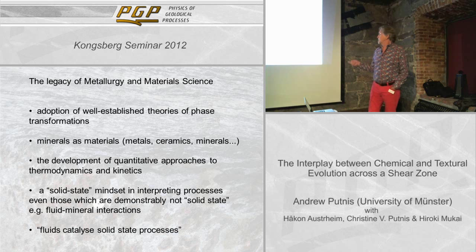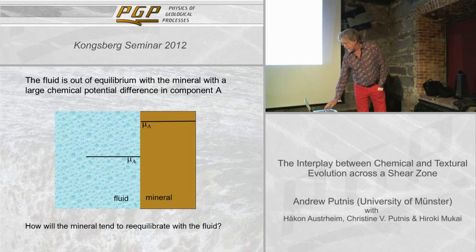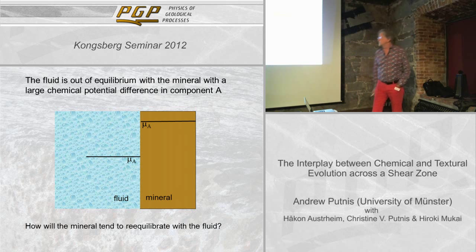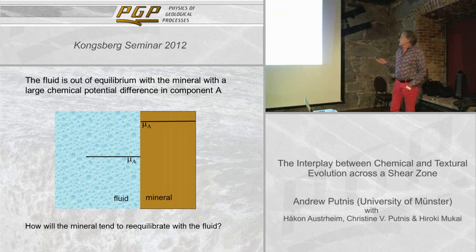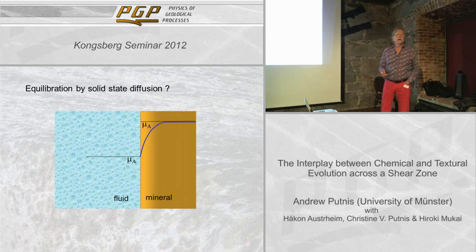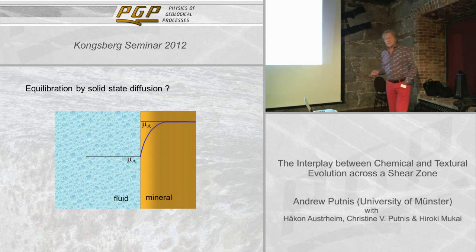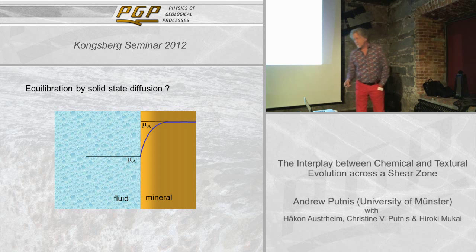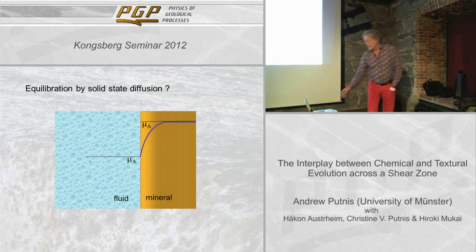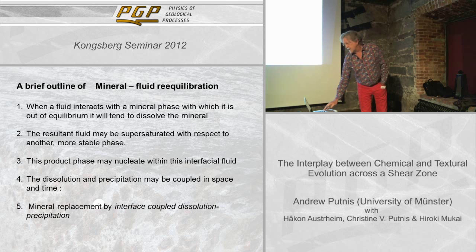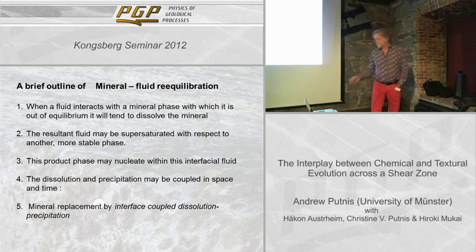So if we want to talk about fluids — everyone agrees that fluids make things go faster. But if we take a simple situation where we have a fluid that's out of equilibrium with a mineral, a lot of models give you a diffusion profile as if you're going to equalize this chemical potential by diffusing stuff in the mineral. Maybe at some very high temperature this may be the case, but I would contend that this mineral will try to equilibrate with a fluid by dissolving.